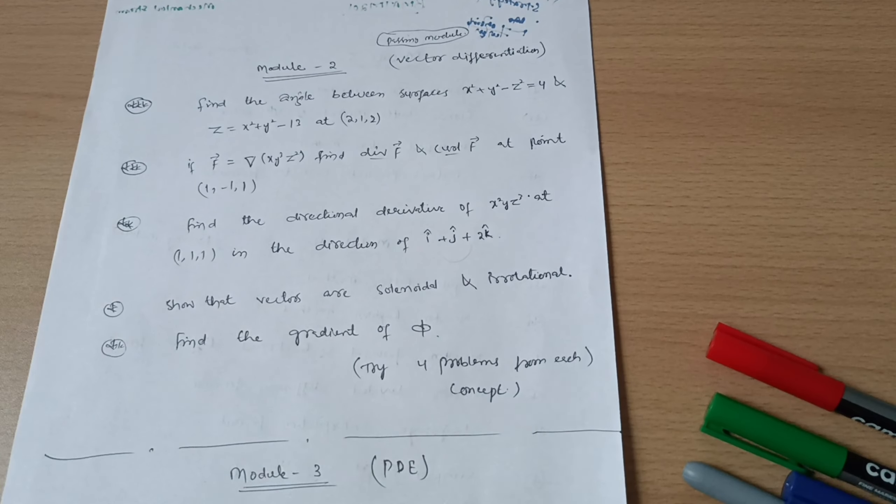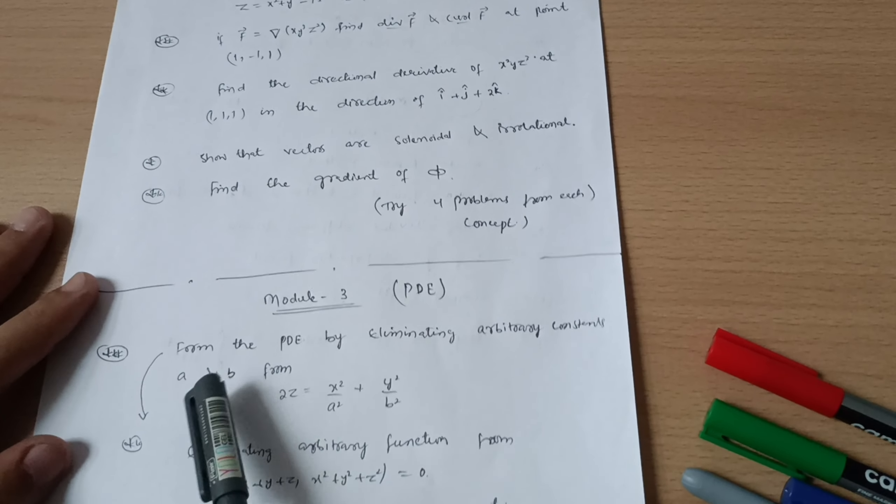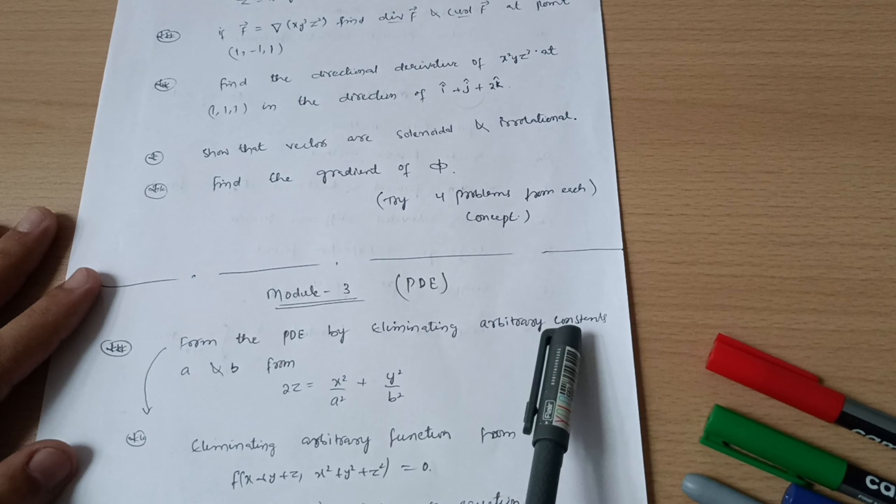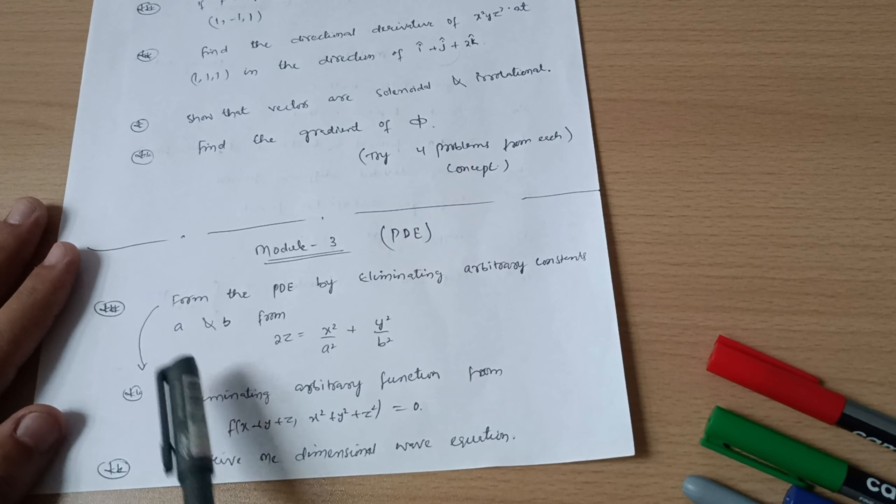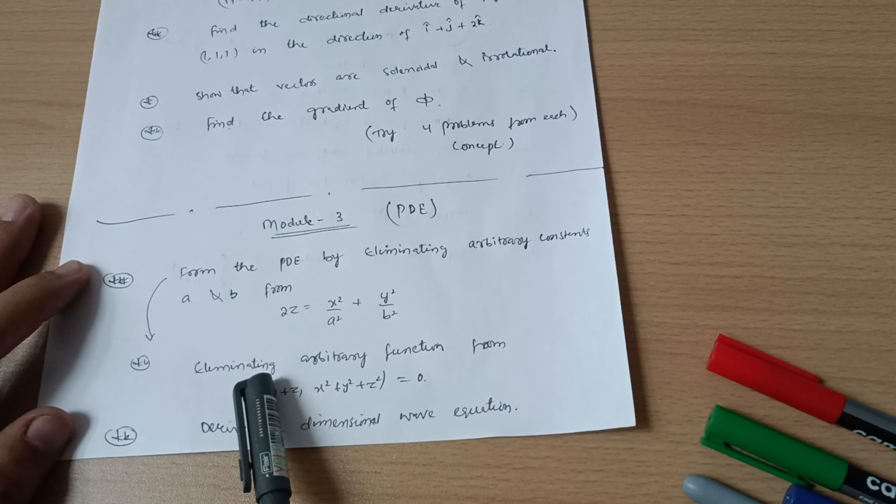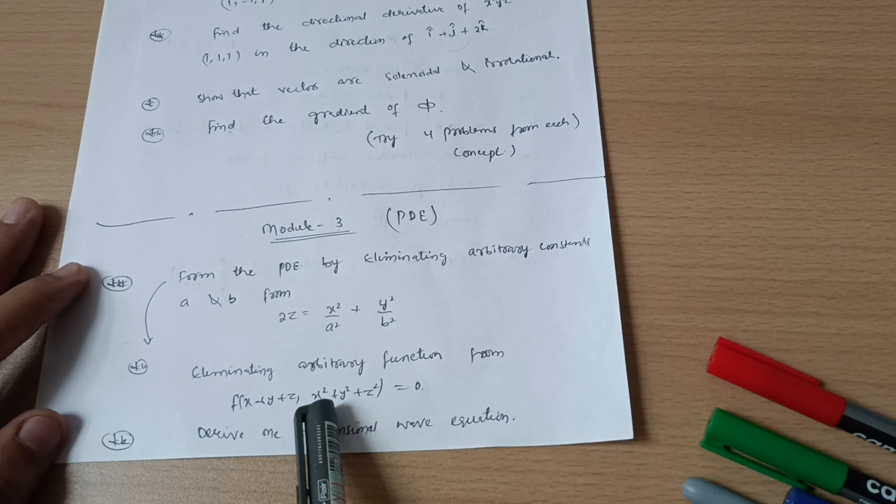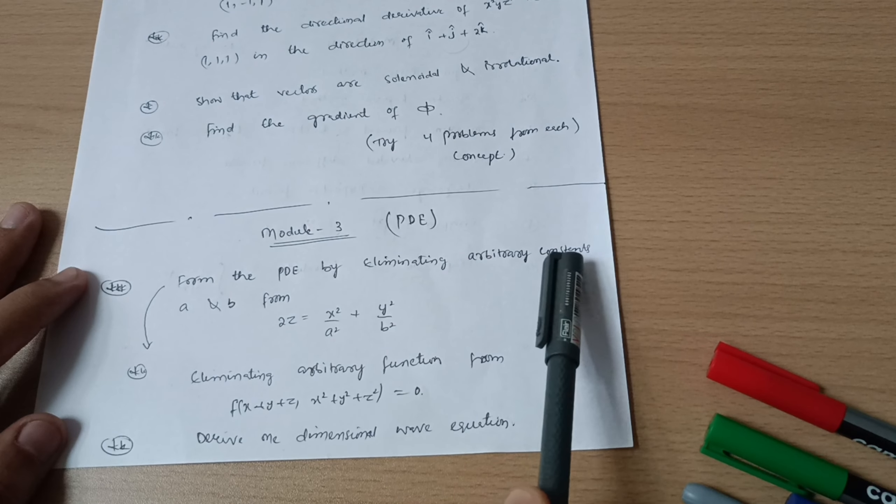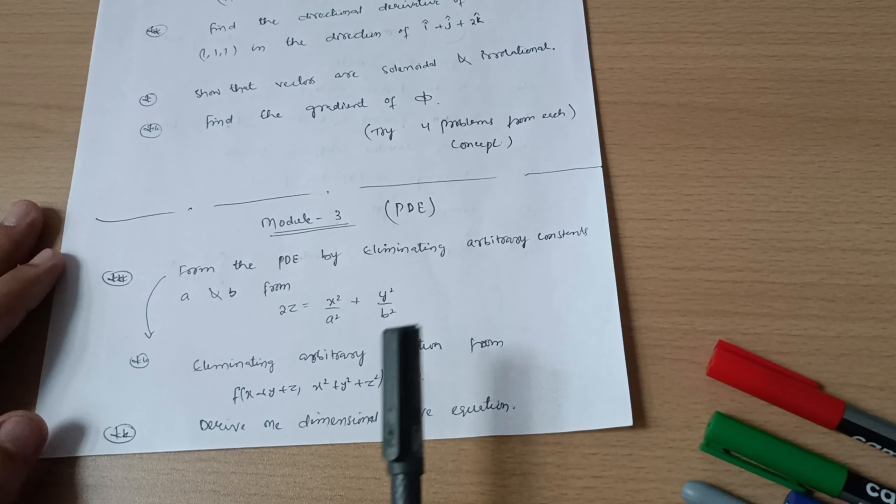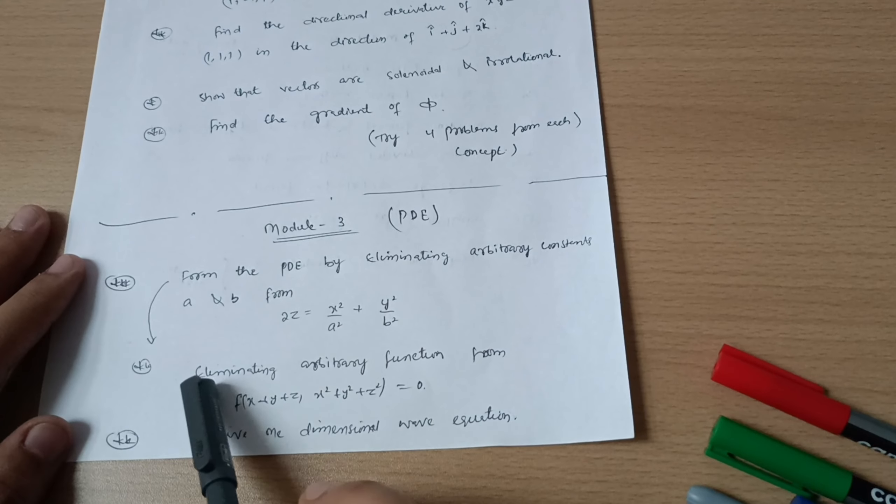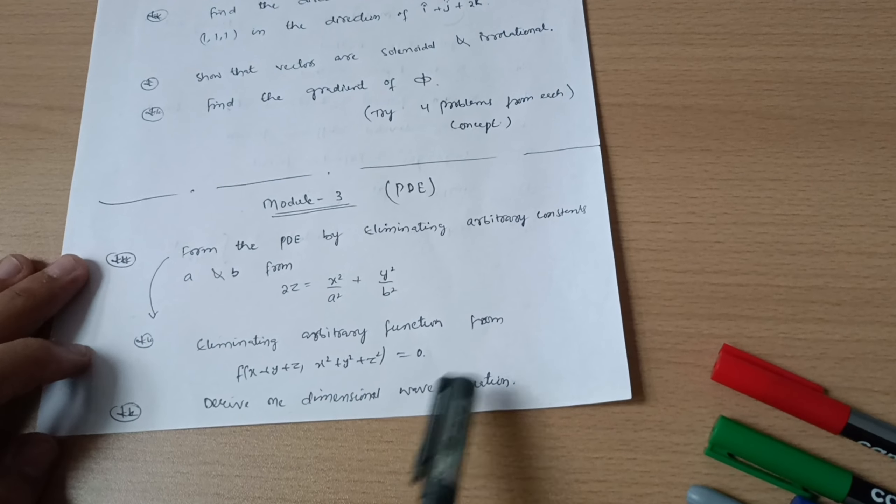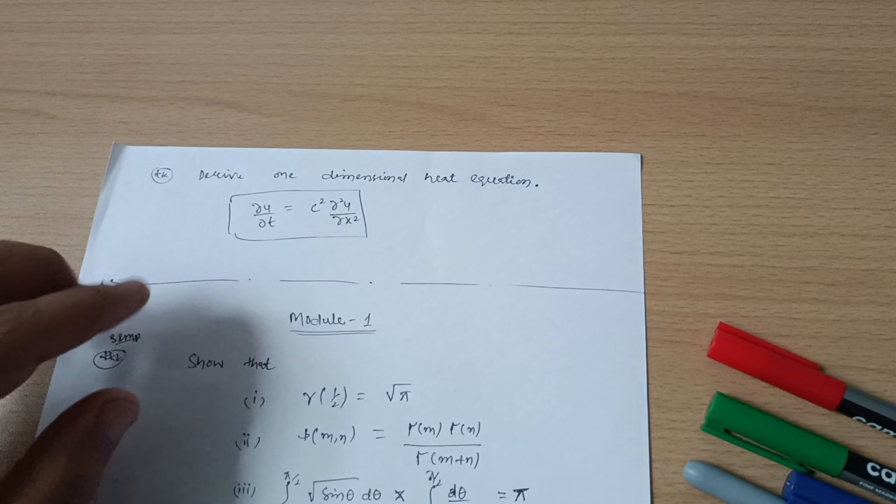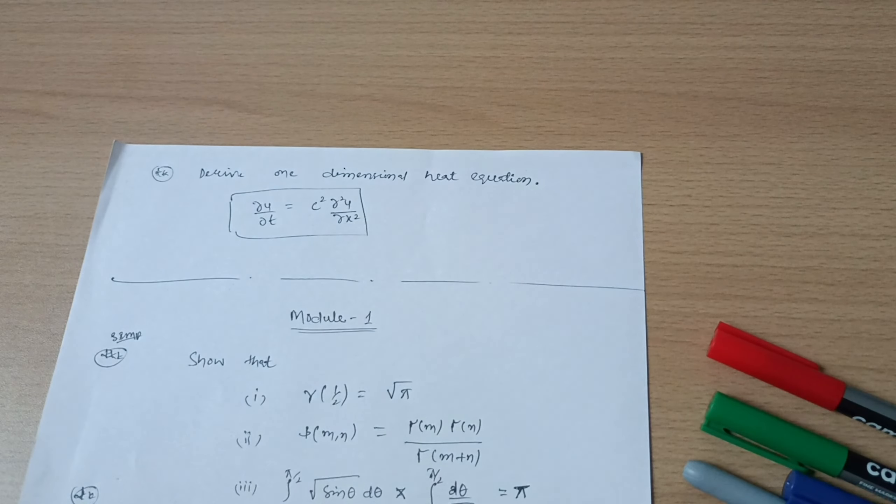Next is Module 3, partial differential equations. Questions will be: form the PDE by eliminating arbitrary constants a and b from 2z equals x square by a square plus y square by b square. Or you can get the other part: form the PDE by eliminating arbitrary function from f of x plus y plus z, comma, x square plus y square plus z square equals zero. This is eliminating arbitrary constants, this is eliminating arbitrary function. One definite question will be: derive one-dimensional wave equation, and derive one-dimensional heat equation, dou u by dou t equals c square dou square u by dou x square.